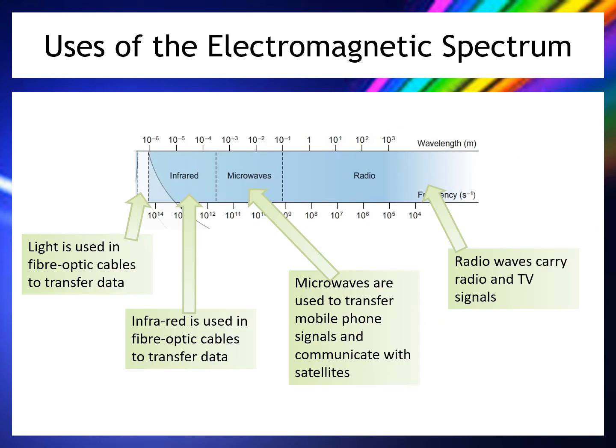You need to know the uses of the different parts of the electromagnetic spectrum. Starting on the right-hand side, radio waves unsurprisingly carry radio and TV signals. The microwave section, between infrared and radio, is used to transfer mobile phone signals and communicate with satellites. Radio waves, being much longer in wavelength, are not used to talk to satellites because they reflect off the ionosphere.